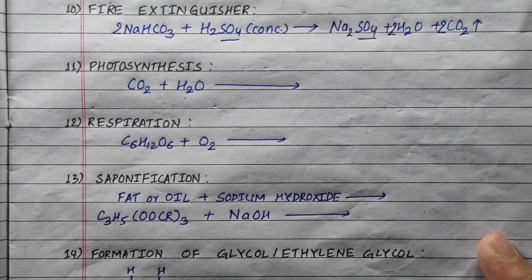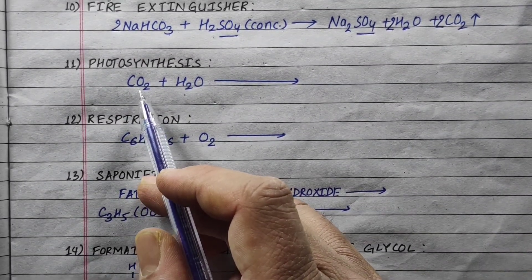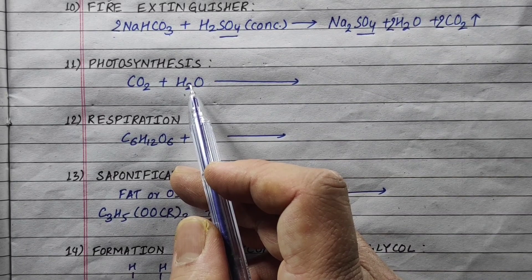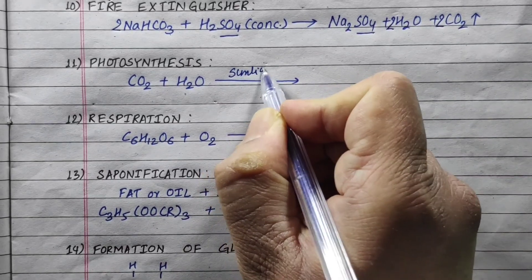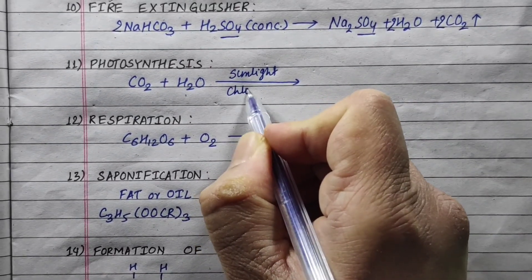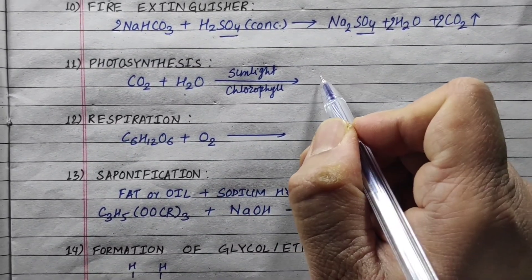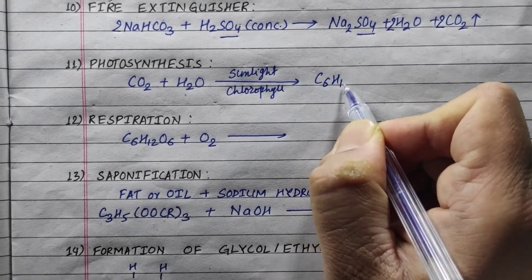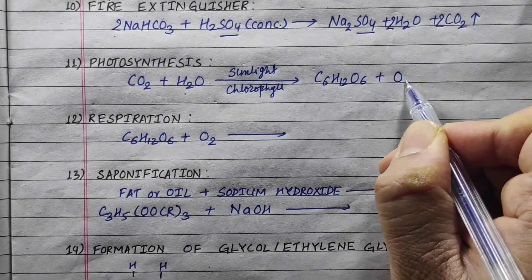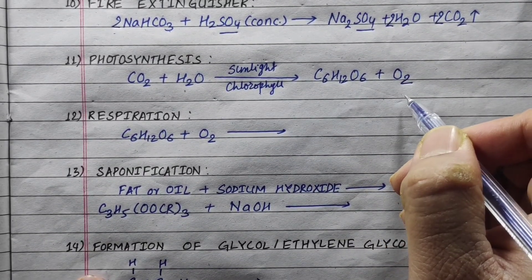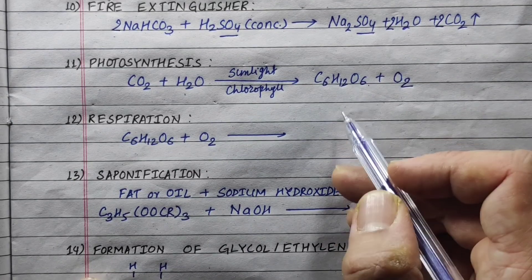Now, photosynthesis. Green plants take in carbon dioxide from air and water from the soil. In the presence of sunlight and chlorophyll, green plants produce glucose — formula C₆H₁₂O₆ — and release oxygen. Balanced: 6CO₂ + 6H₂O → C₆H₁₂O₆ + 6O₂.